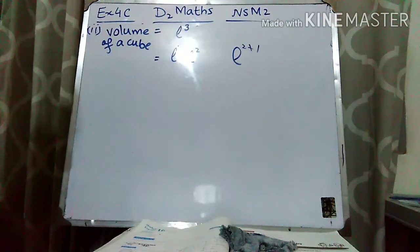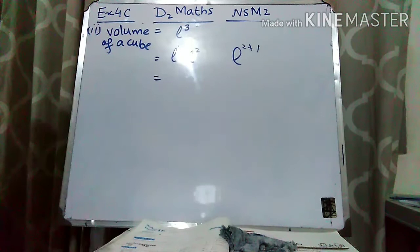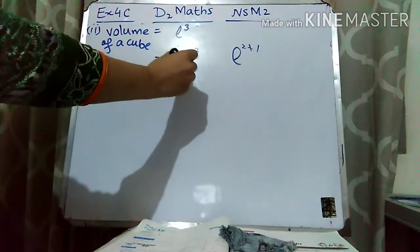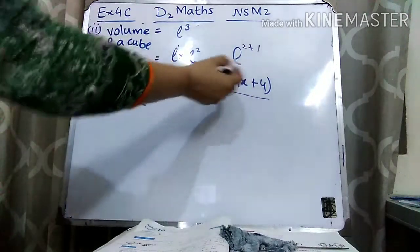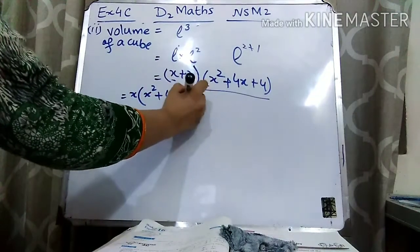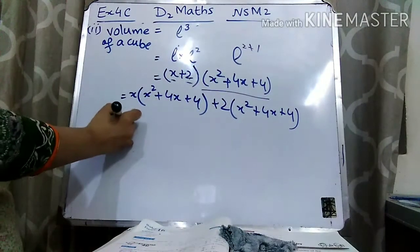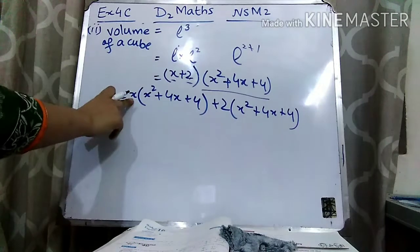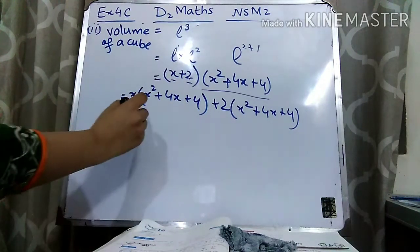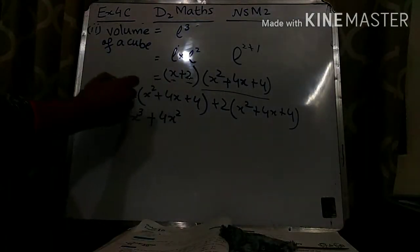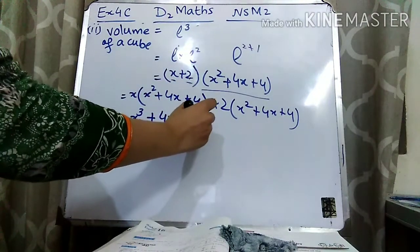Now we know the value of L and we know the value of L². The value of L is the length we found in part one, which is x + 2. And L² is basically the area that was given, which is x² + 4x + 4. So we need to multiply (x + 2) with (x² + 4x + 4). First we will multiply x with the whole bracket, and then we will multiply 2 with the whole bracket.